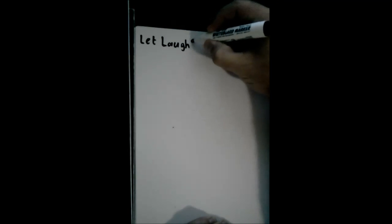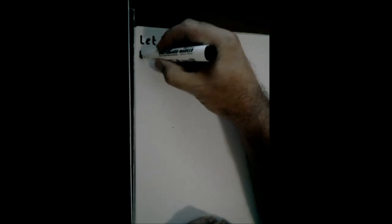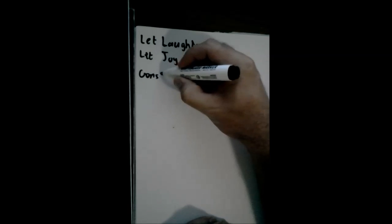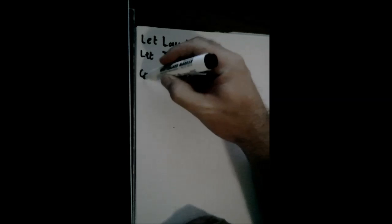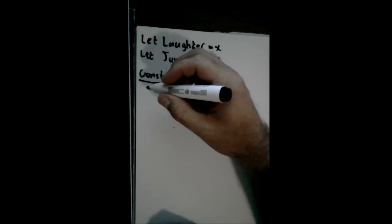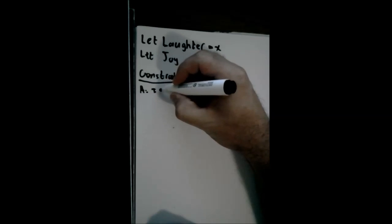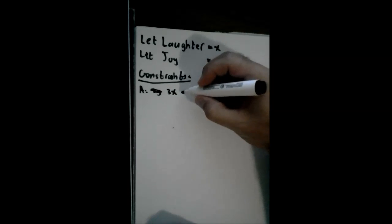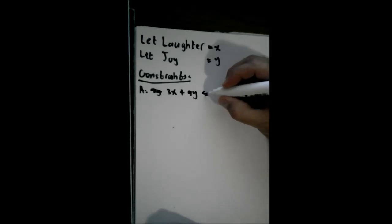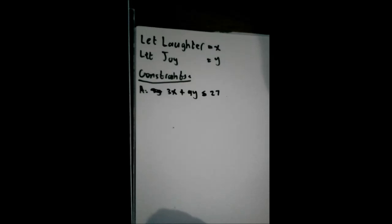Now we need to set up a system of constraints that we can then translate into a graph. So let laughter equal x and let joy equal y. Now we need to set up the constraints. The first constraint, let's look at fragrance A for that. Fragrance A we have 27 grams available per week and we know that 3 grams of fragrance A goes into a liter of laughter and 9 grams of fragrance A go into a liter of joy. So 3x plus 9y has to be less than or equal to 27 because we only have 27 grams of fragrance A available per week.